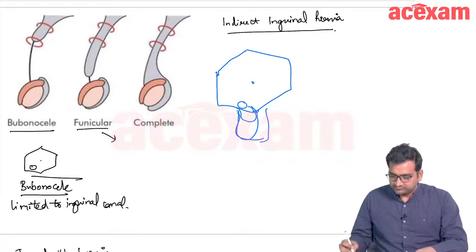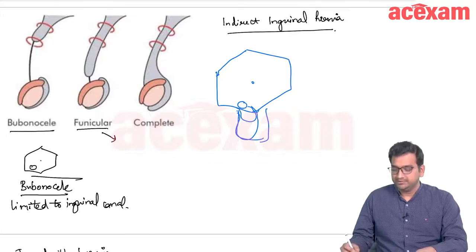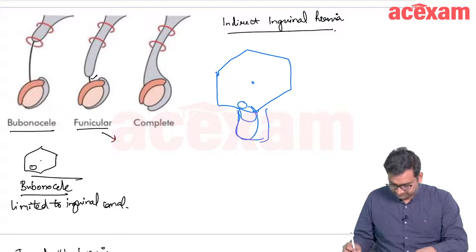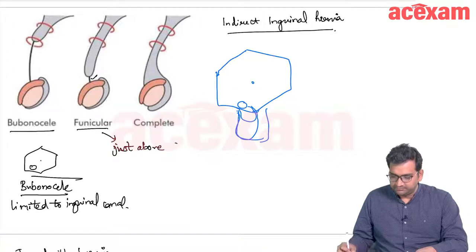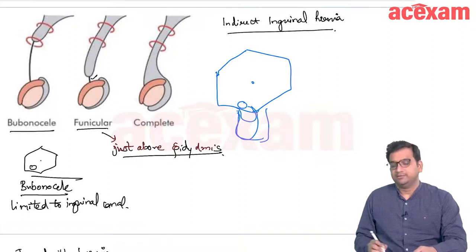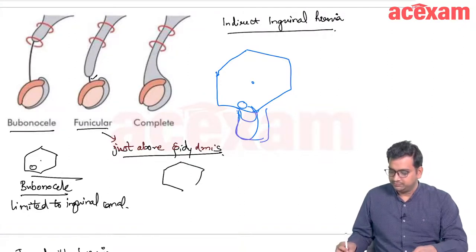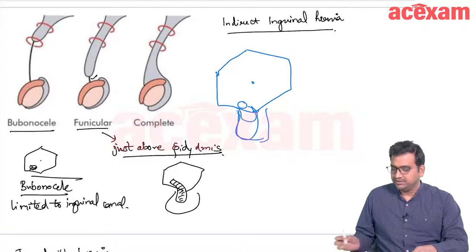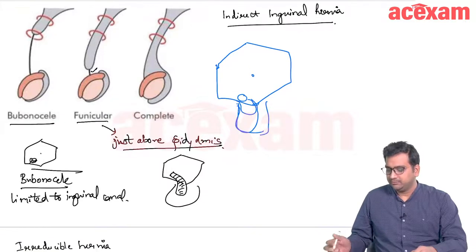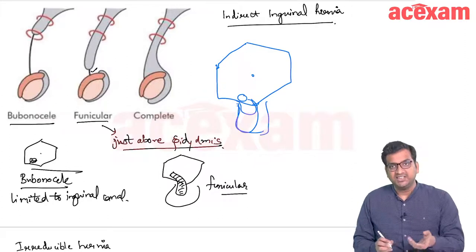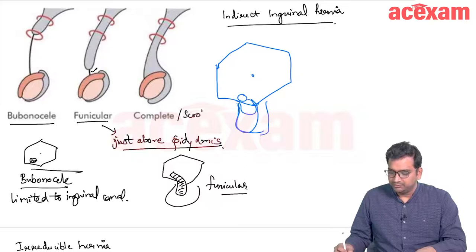When the sac reaches just above the epididymis, it is a funicular inguinal hernia. And whenever the sac extends all the way to the scrotum, it is a complete or scrotal hernia.